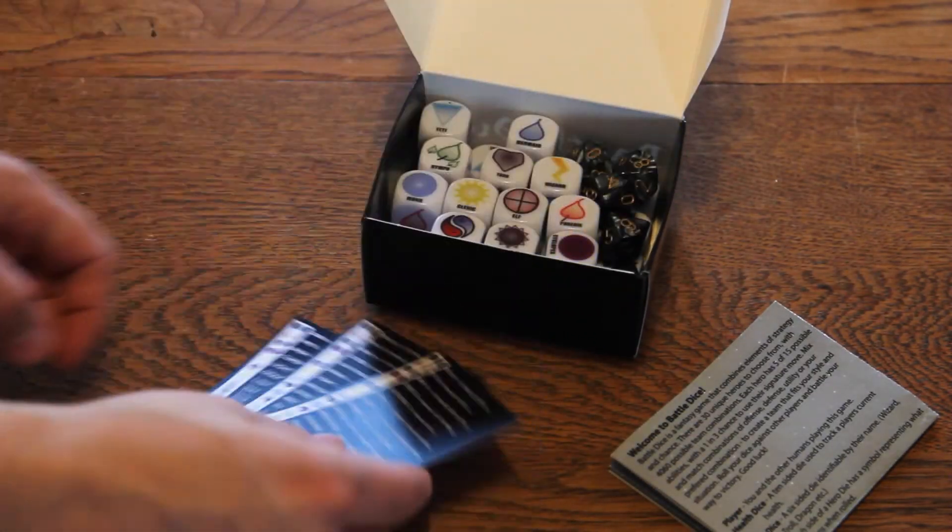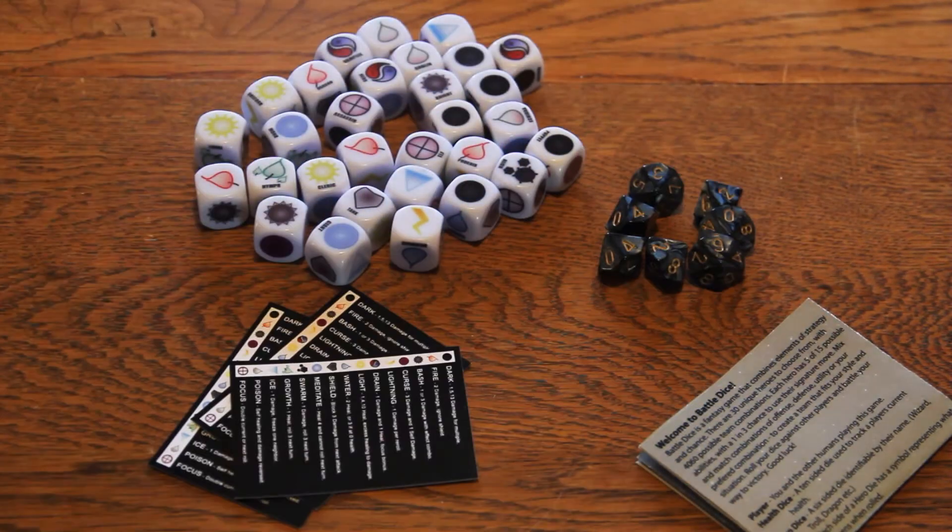When you open the box you should find one set of instructions, three small ability cheat sheets, 30 different white hero dice, and 7 black 10-sided dice.